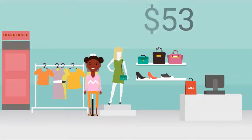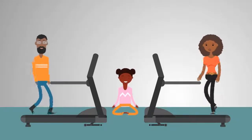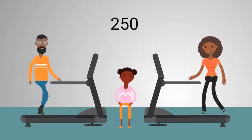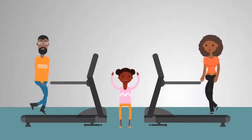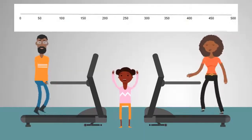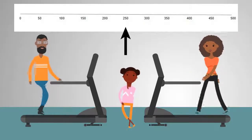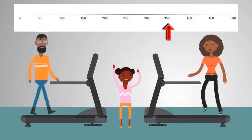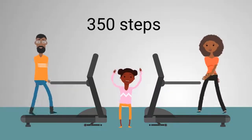Let's go to the gym with mom and dad to learn about 100 more. My mom and dad are trying to be healthy by going to the gym. Each day they walk on the treadmill and count their steps. Their goal is to walk 100 more steps each day. Yesterday they walked 250 steps. Let's use our number line to find out what is 100 more steps. This number line is counting by 50s — it starts at zero and goes to 500. Awesome job! 100 more than 250 is 350. My parents will walk 350 steps today at the gym.